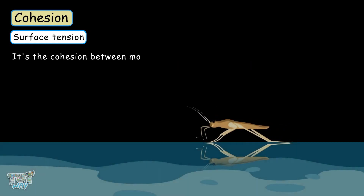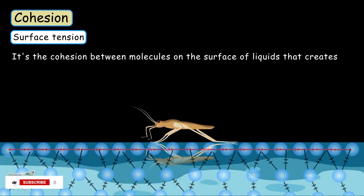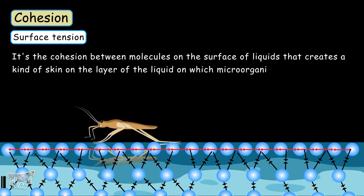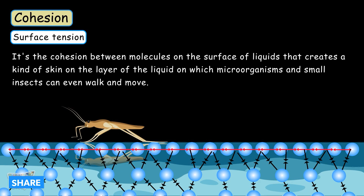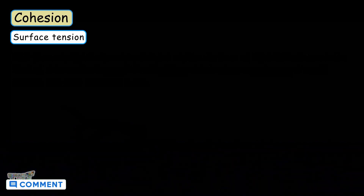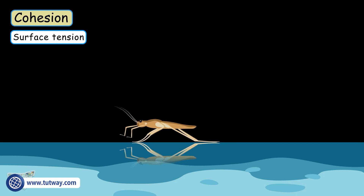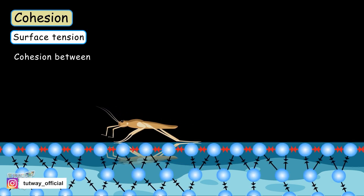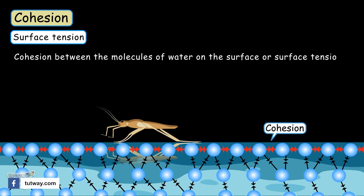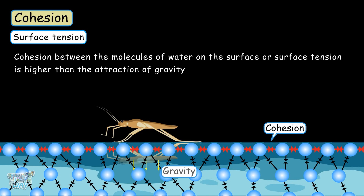Now let's learn what surface tension is. It is the cohesion between the molecules on the surface of liquids that creates a layer like a skin, on which microorganisms and small insects can walk and move like we walk on hard surfaces. Have you ever seen small insects walking on water? Cohesion between the water molecules on the surface — the surface tension — is higher than the gravitational attraction on these insects, which is why they are able to walk on the surface of water, due to the layer of water molecules strongly attracted to each other, which is strong enough to carry the weight of these small insects.